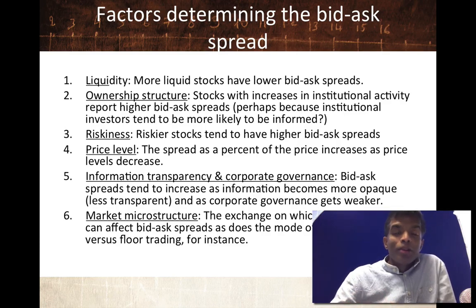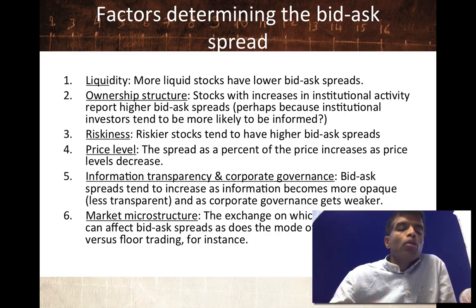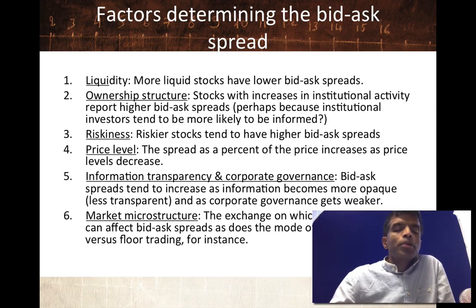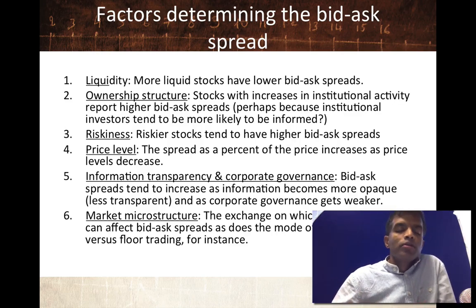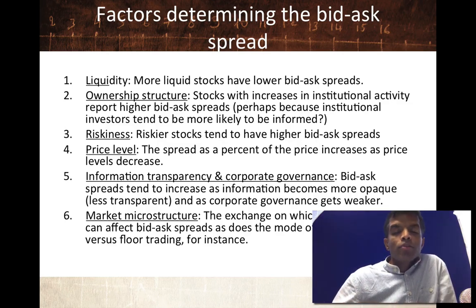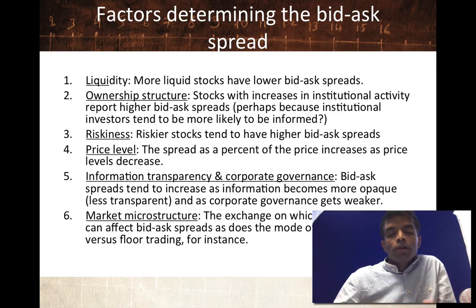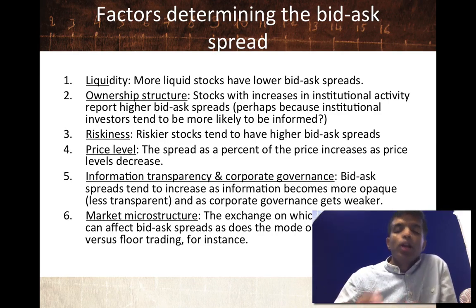The biggest factor that determines the spread as a percentage of the price is the level of the price. If you buy a low-priced stock, I can almost guarantee that the spread as a percentage of the price is going to be higher than if you buy a high-priced stock. That's why I gave you the example of IBM with a $200 stock price — the spread is going to be tiny because the price level is so high. The spread also seems to be a function of how transparent information is in corporate governance.